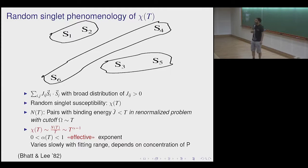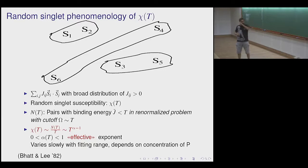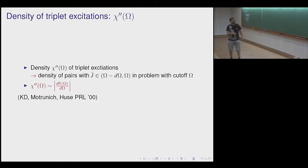If you think like this it's clear that if you have a broad distribution and you've gone down to cutoff scale T, the susceptibility is approximately N(T)/T — all local moments surviving to that scale are effectively free. When you do this numerically, it looks like a power law, not quite a Curie tail but a slower divergence, with an exponent alpha that is a slowly varying function of temperature going to zero.